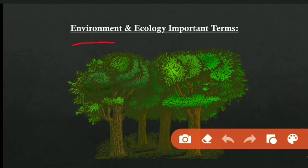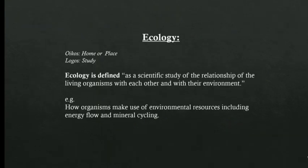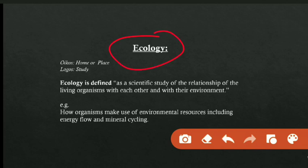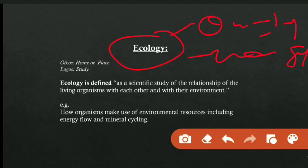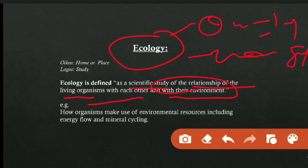The first important term is ecology. Ecology comes from two words: oikos, meaning home, and logos, meaning study. Ecology is defined as the scientific study of the relationship of living organisms with each other and with their environment. For example, how organisms make use of environmental resources, including energy flow and mineral cycling.